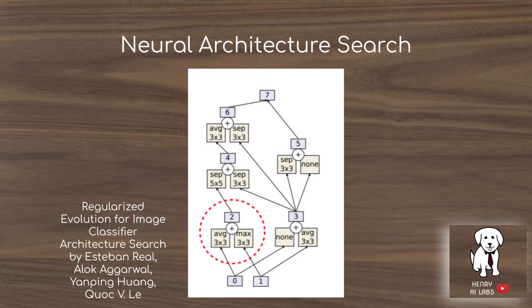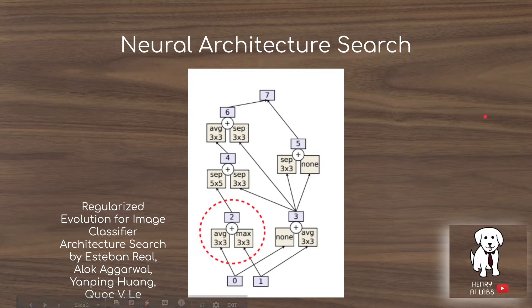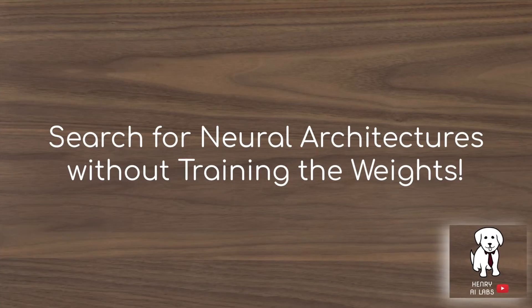Neural architecture search is one of the hottest ideas in deep learning and AI. It involves parameterizing the space of possible building block cells of deep neural networks, stacking them on top of one another to form image classification and recurrent neural networks. This idea is going to be the search for neural architectures but without training the weights.